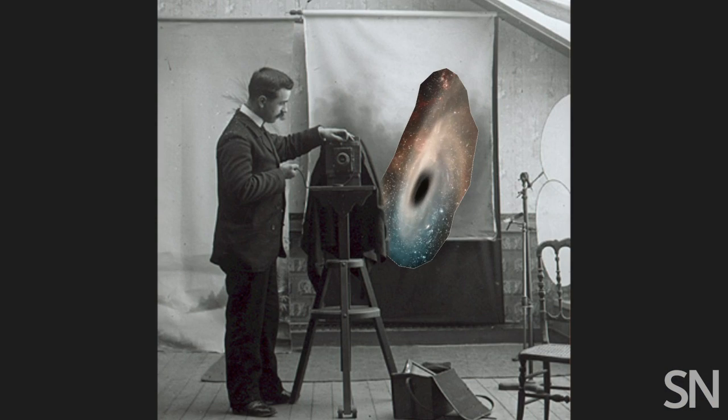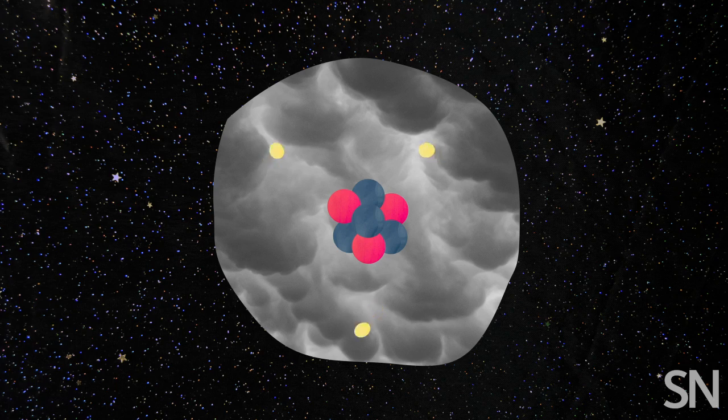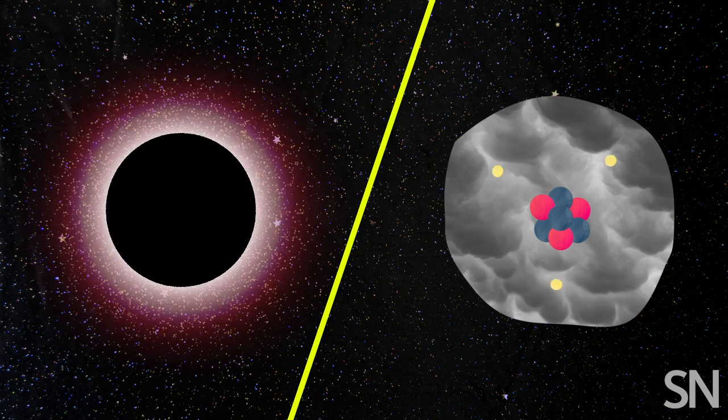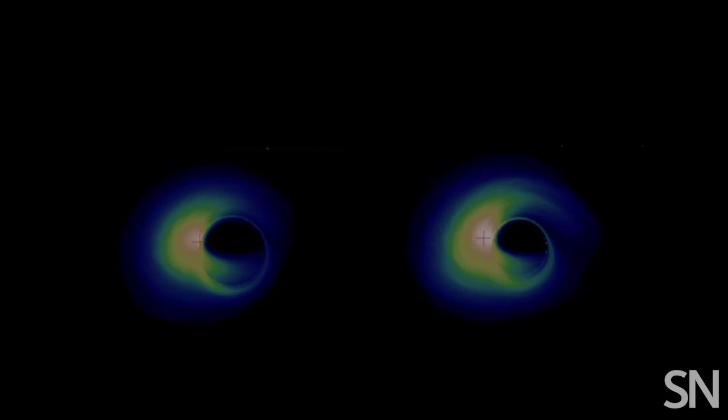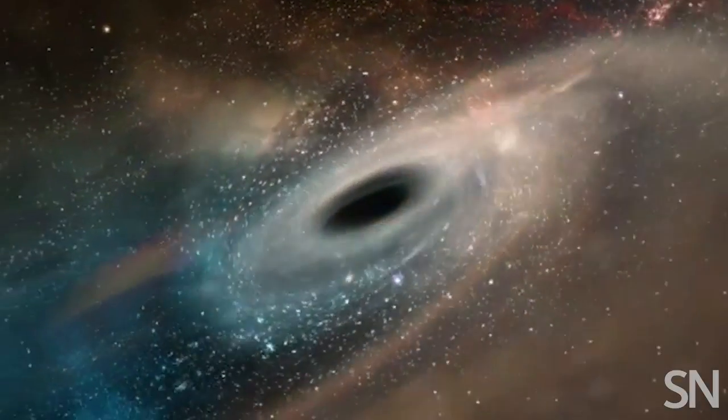Taking a picture of a black hole will mark the most extreme test of general relativity yet. This test of relativity also has implications for the physics theory that deals with very small objects, quantum mechanics. The two of them don't play well together. We don't understand how gravity works on quantum levels. And if we see something that differs from our expectation in this picture of a black hole, that could help point us to one of many theories that try to reconcile quantum mechanics and general relativity.